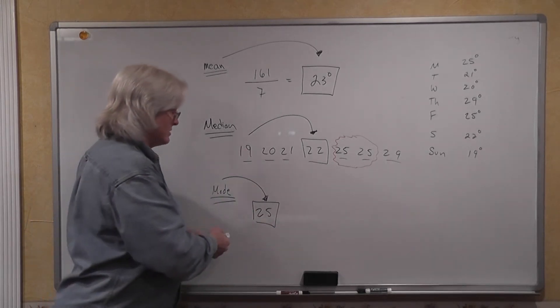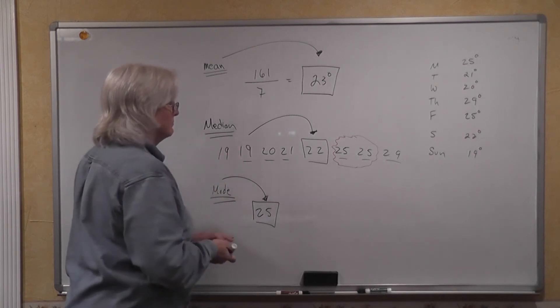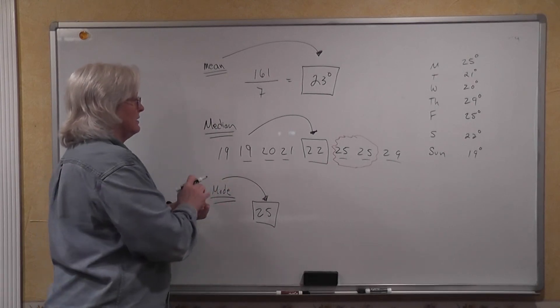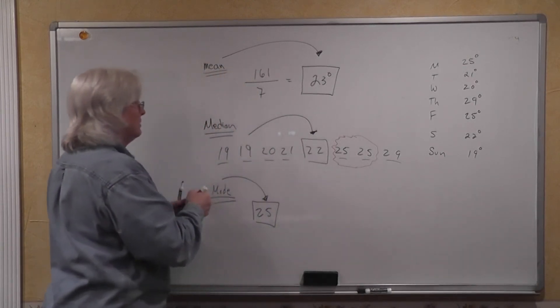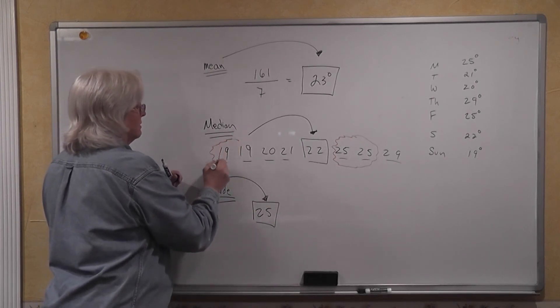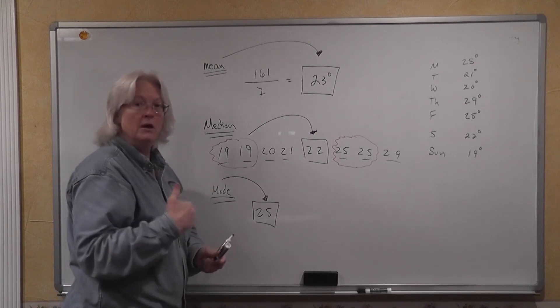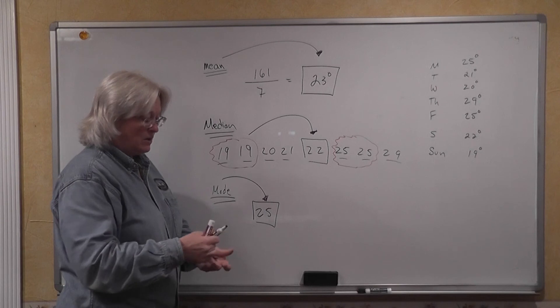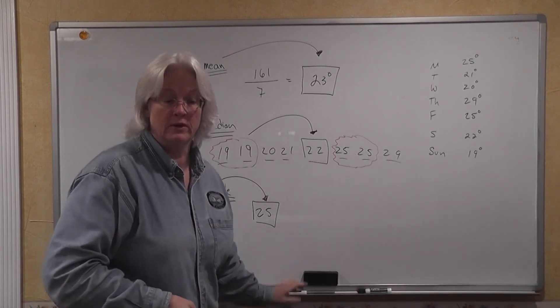But suppose we also had 19. Now at this point, the median messes up. If we had 19 here, we have a second number that is used twice. So rather than having a mode of 25, the mode would be 19 and 25. So those are really the only differences that you're going to be looking for in this section.